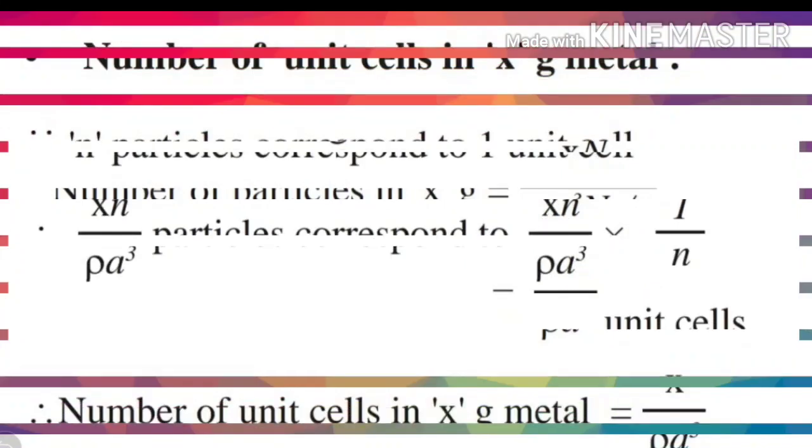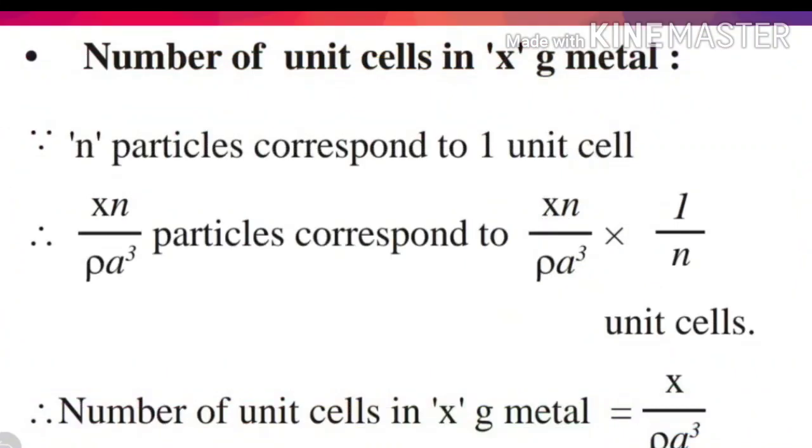Next, the number of unit cells in x grams of crystal or metal: if n particles corresponds to one unit cell, the final formula for number of unit cells in x grams of metal is equal to x divided by ρ times a³.